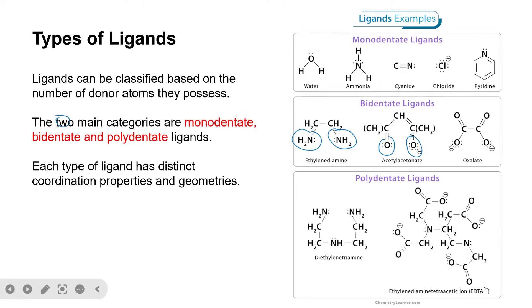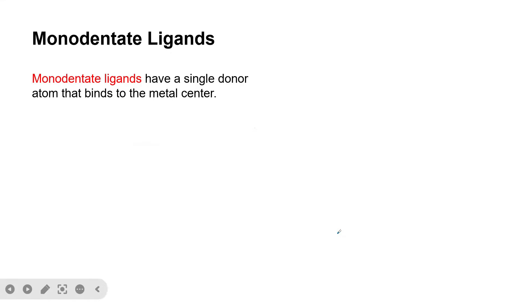For polydentate ligands, we have diethylenetriamine, which is an example of a tridentate ligand — it can donate one lone pair from here, one from here, and one from here, making it tridentate. Then we have ethylenediamine tetraacetic acid (EDTA), which is an example of a hexadentate ligand, meaning it can donate six lone pairs of electrons.